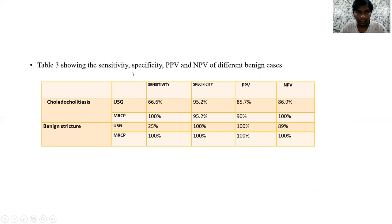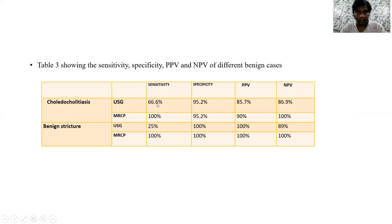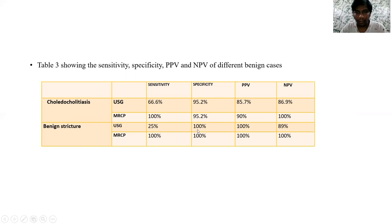Table 3 shows sensitivity, specificity, PPV, and NPV for different benign cases. For choledocholithiasis, the sensitivity, specificity, PPV, and NPV of USG were 66.6%, 95.2%, 85.7%, and 86.9% respectively, and for MRCP it was 100% across all parameters. USG had a very poor sensitivity of 25%, specificity of 100%, PPV and NPV of 89% for benign strictures. For MRCP, sensitivity, specificity, PPV, and NPV were all 100%.